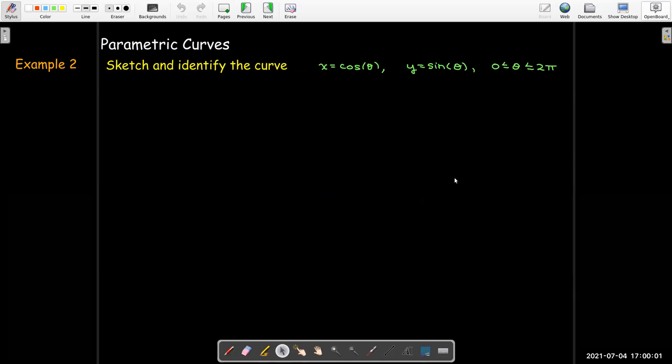Now, we'd like to avoid whenever possible using brute force. That is, making a table of values. So when I'm given trig functions, I'd like to see if there's any trig identity that could help me identify the curve. So for cosine and sine, I know that cos squared theta plus sine squared theta equals 1.